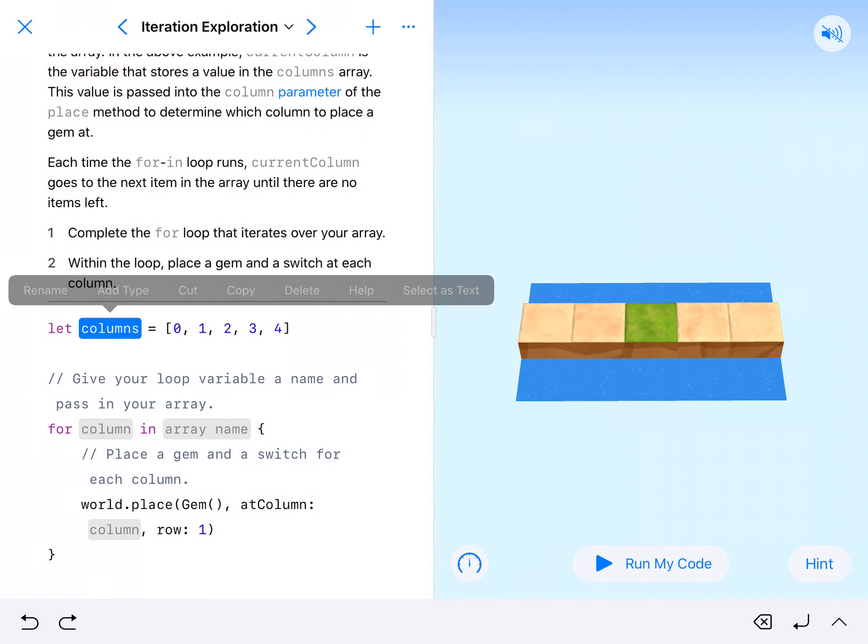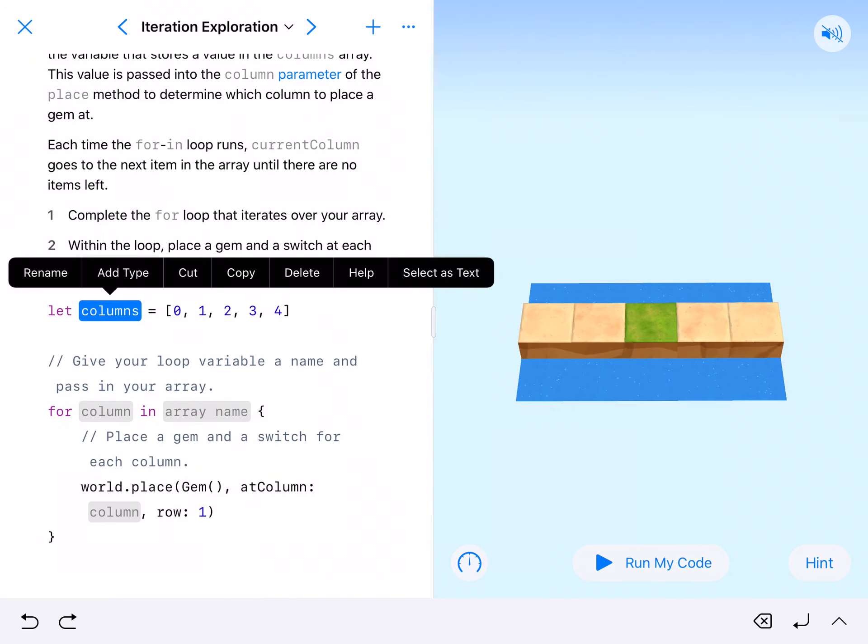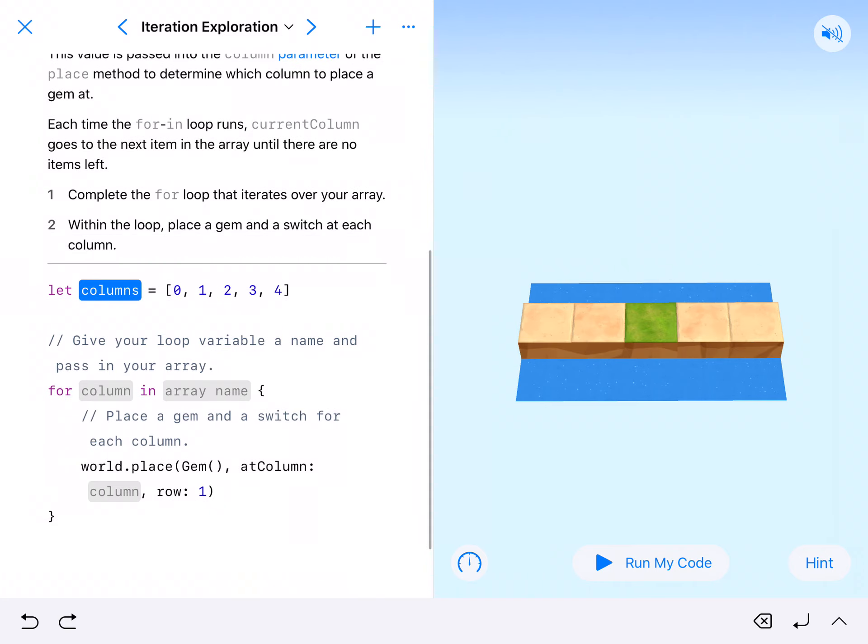We have our let columns equal 0, 1, 2, 3, 4. We're supposed to give our loop a variable name and pass it into your array. They want us to call our loop variable column, so we'll go ahead and do that.